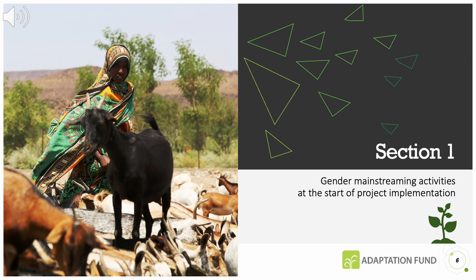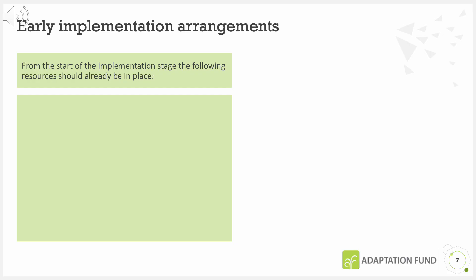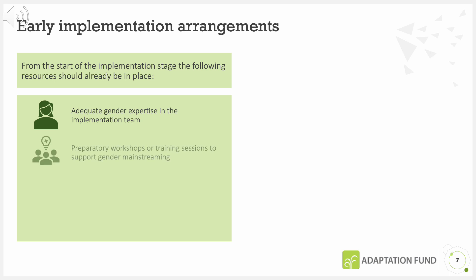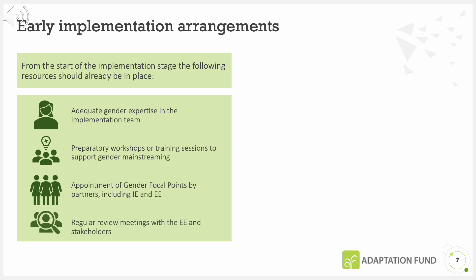Section 1: Gender mainstreaming activities at the start of project implementation. From the start of the implementation stage, the following resources should already be in place: adequate gender expertise in the implementation team, preparatory workshops or training sessions to support gender mainstreaming, appointment of gender focal points by partners including implementing entities and executing entities, and regular review meetings with the executing entities and stakeholders.